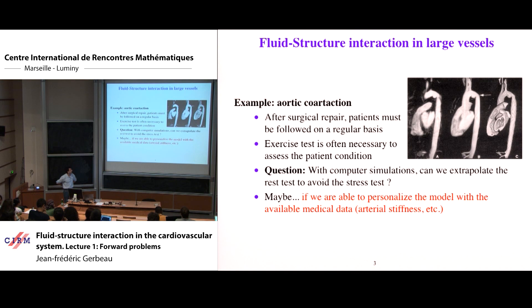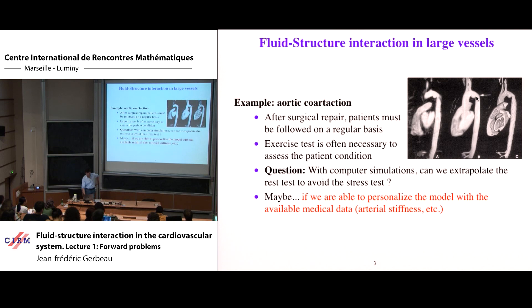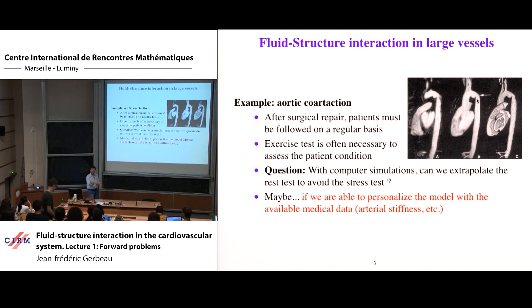Let me give you an example of a medical situation where this phenomenon is important. The problem here is called aortic coarctation, where the aorta is narrowed in a region. This can be cured by surgery, but after surgical repair, the patient has to be monitored regularly. Interestingly, it is not sufficient to take an image, because sometimes the image looks good but the patient doesn't feel good at exercise, and sometimes the image doesn't look good but the patient is okay. This shows that it's not only anatomy but really function — the way the artery responds to the blood flow.